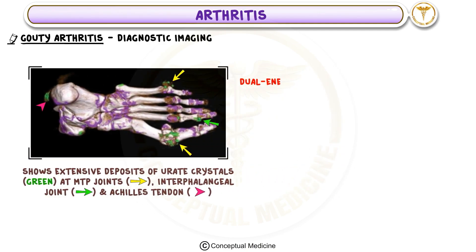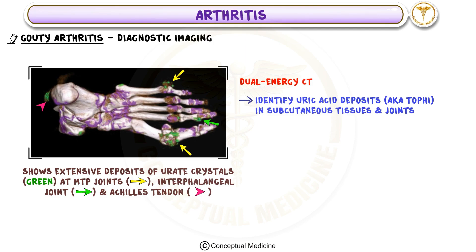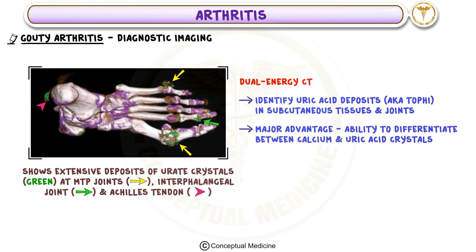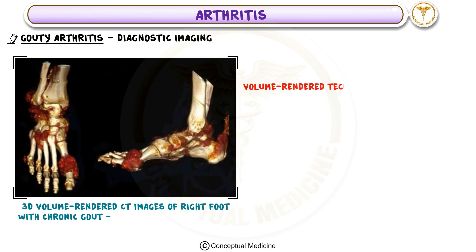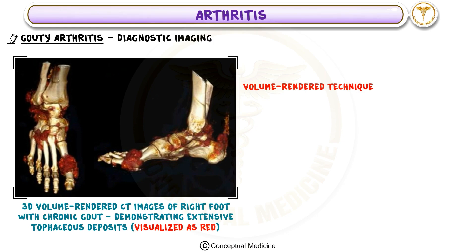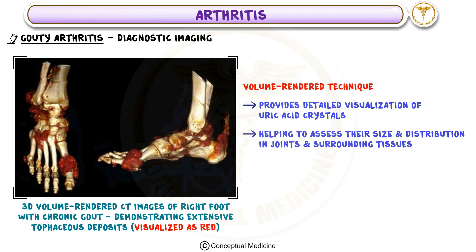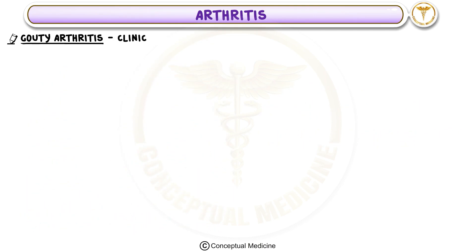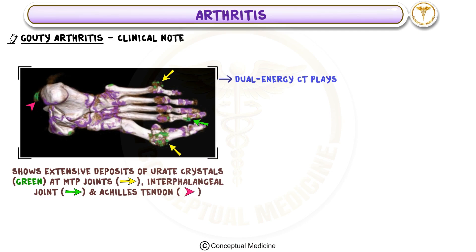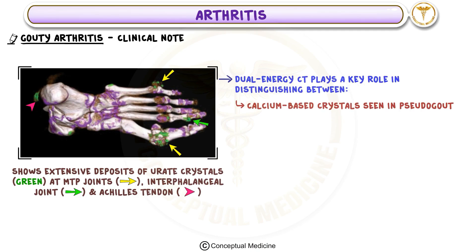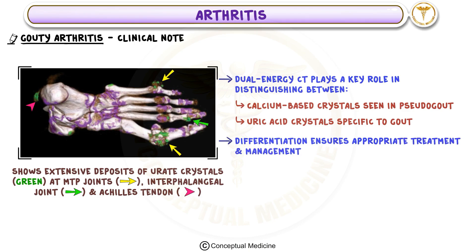Diagnostic Imaging: Dual-energy CT (DECT) can identify uric acid deposits, also known as tophi, in subcutaneous tissues and joints. A major advantage of DECT is its ability to differentiate between calcium crystals and uric acid crystals, which is crucial for accurate diagnosis. Volume Render Technique (VRT) using advanced 3D imaging provides detailed visualization of uric acid crystals, helping assess their size and distribution. DECT plays a key role in distinguishing calcium-based crystals seen in pseudogout from uric acid crystals specific to gout, ensuring appropriate treatment.